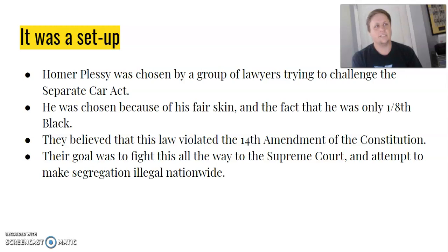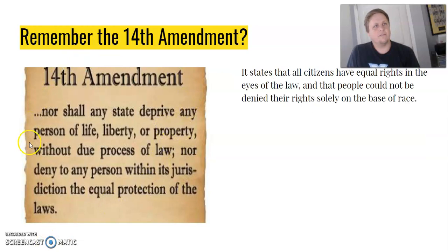They argued that Homer Plessy's civil rights were being violated — not only the 14th Amendment but the 13th — because he was not allowed on the same train cars as whites. The 14th Amendment states no state shall deprive any person of life, liberty, or property. They weren't depriving Plessy of life or property, but his liberty — his freedom to choose — was being taken away without due process. There was nothing Homer Plessy could do to get himself on the other car; he was simply removed due to state law.